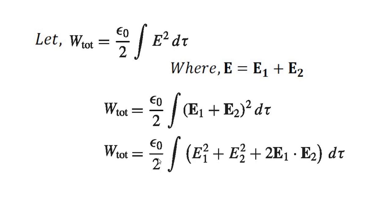Using the (a + b)² expansion format, W_total equals ε₀/2 times the integral of (E₁² + E₂² + 2E₁·E₂) dτ. Here E₁² and E₂² are scalar quantities and E₁·E₂ involves vector dot products. Comparing terms, ε₀/2 times the integral of E₁² dτ gives W₁.